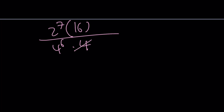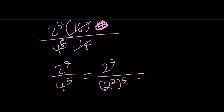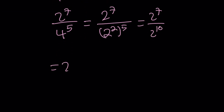Notice that everything is a power of 2, so let's simplify first. 4 goes into 16 four times, and we can also take out one of the 4s, giving us 2 to the 7th divided by 4 to the 5th. Again, 4 can be written as 2 squared to the 5th, so this is 2 to the 7th divided by 2 to the 10th. By subtraction, we get 2 to the power of negative 3 again — that is 1 over 8, as before.